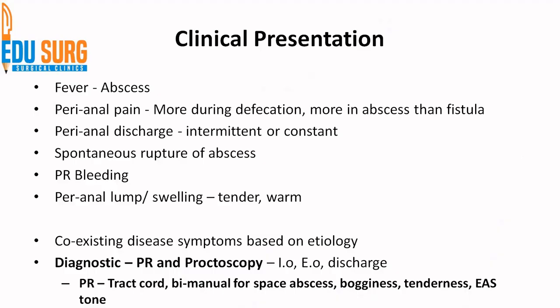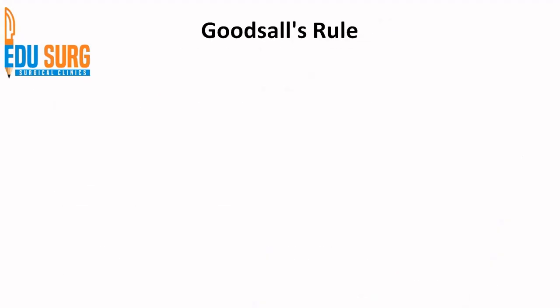Do a bimanual examination along the tract and look for space abscess. Bogginess and tenderness can be felt, and external anal sphincter tone needs to be assessed. Once this is done, perform a proctoscopy to confirm your findings. Proctoscopy also helps in planning the surgery.